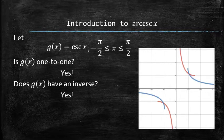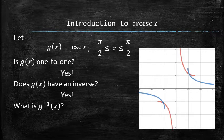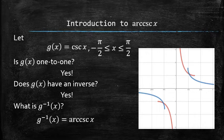What is this function? This function is not any of the functions that we already know, so we give it a name: the arc-cosecant of x function.